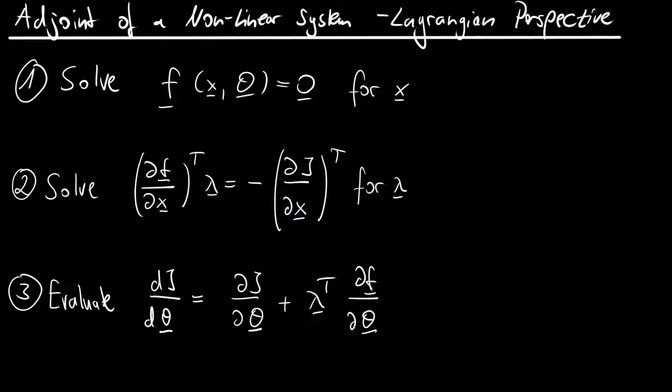Hi and welcome to this new video. As said in the intro, we want to look again at the derivations of the adjoints for non-linear systems, this time in a Lagrangian perspective. We will first recap the three-stage process, then look at the relevant quantities, and then make a derivation using the Lagrangian perspective.